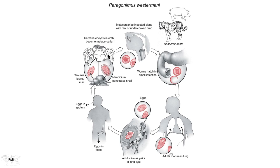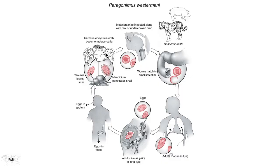We catch the infection by eating raw or undercooked crustaceans — in this case, an undercooked crab. We bite the leg, carapace, or claw of the crab to get at the meat inside, and in doing so, the metacercariae on the outside of the crab is loosened and becomes part of our meal. The metacercariae then travels down the alimentary canal until it gets into the stomach.